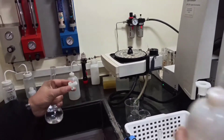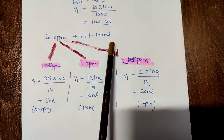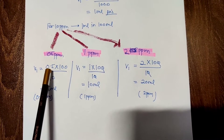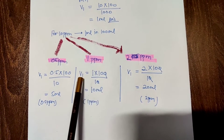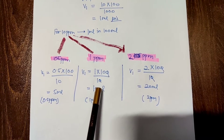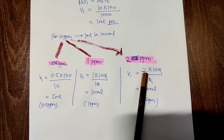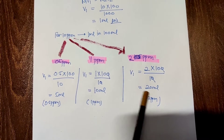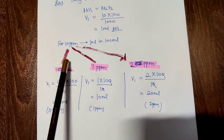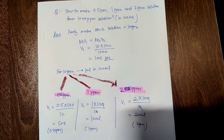From this stock solution we will make three solutions: 0.5, 1, and 2 ppm. Note: 1 ppm equals 1 ml from the 10 ppm stock. Using the same formula C1V1 = C2V2 and solving for V1: for 0.5 ppm we need 5 ml, for 1 ppm we need 10 ml, and for 2 ppm we need 20 ml from the 10 ppm stock solution, all made up to 100 ml.